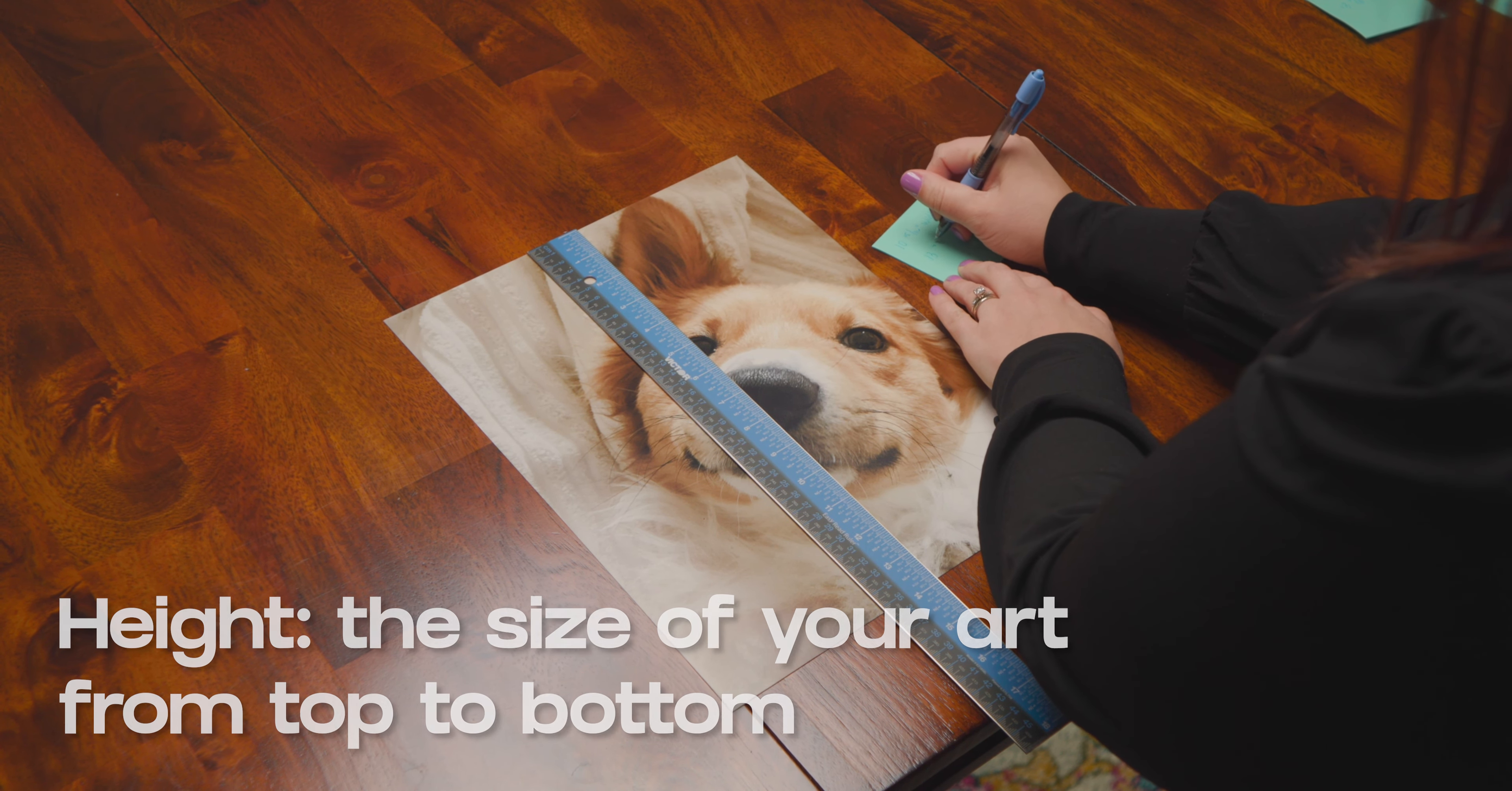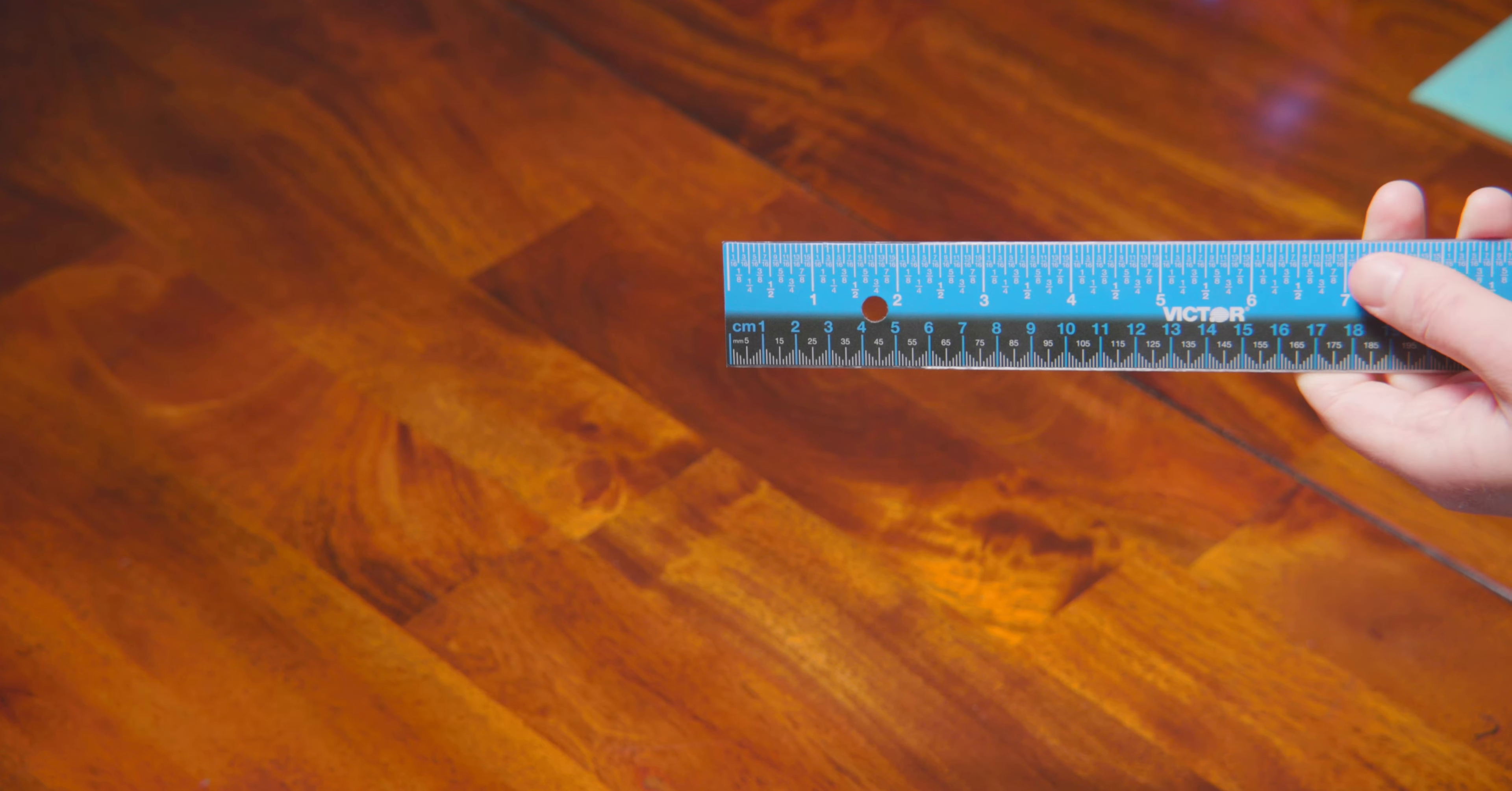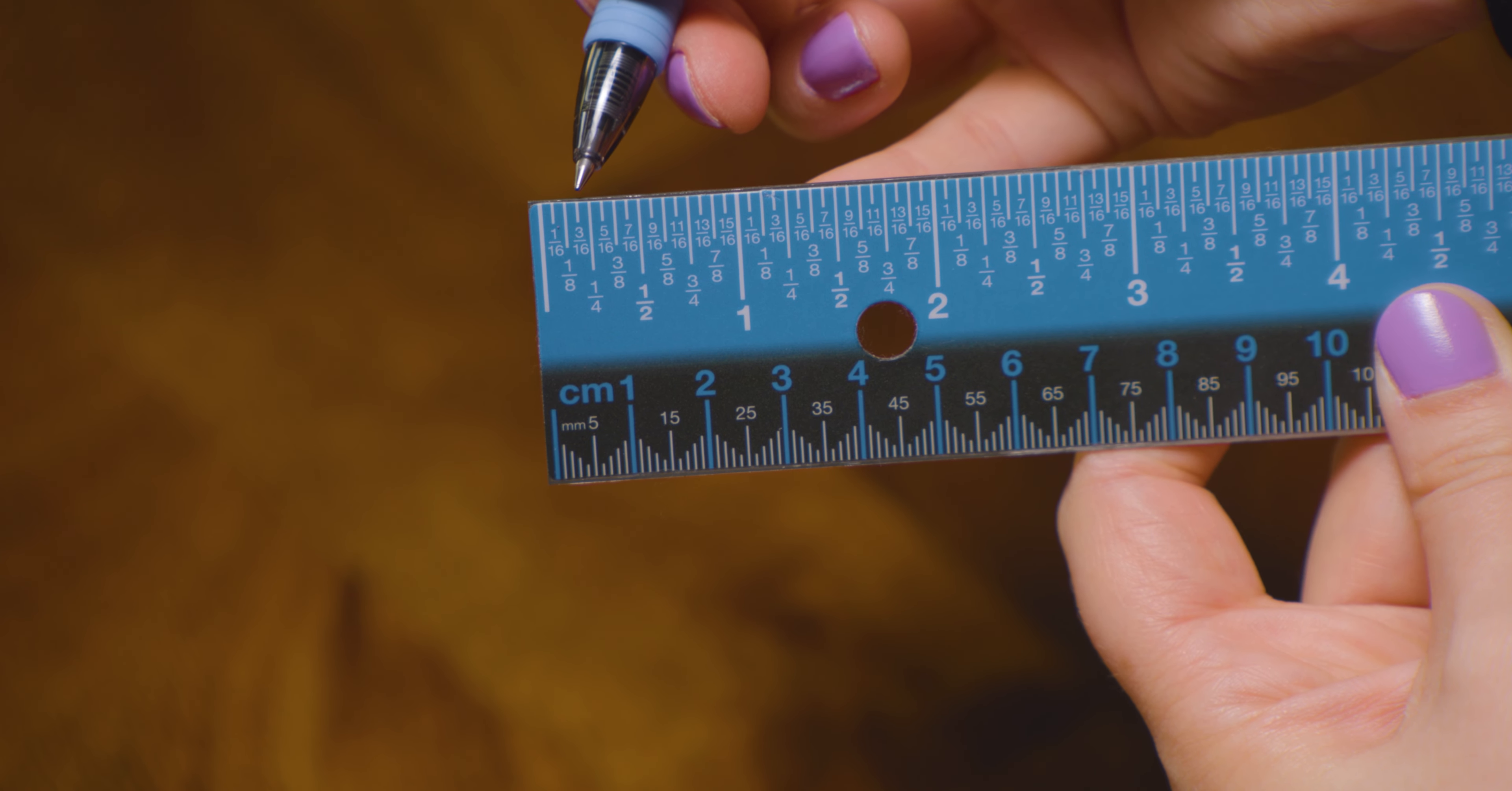Need some help measuring the finer measurements of your ruler? Don't sweat it, we've got some tips. First, make sure you're measuring in inches, not centimeters. For every inch, there are often 15 smaller markers in between.